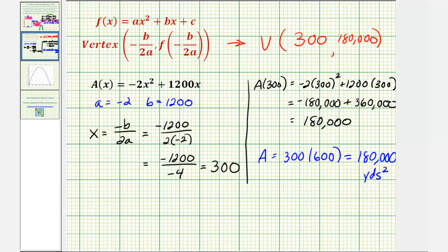So just to summarize, the dimensions that maximize the area would be 300 yards by 600 yards. And the maximum area is 180,000 square yards.